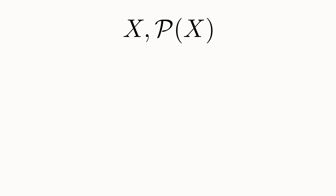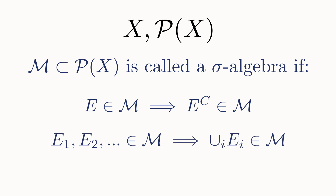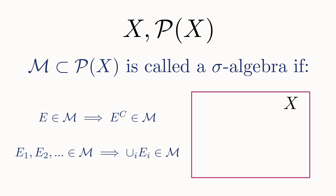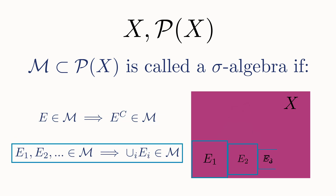Now that we have an abstract set x and understand what a power set is, we are in a position to define a sigma algebra. In order to form a sigma algebra, we need to gather a non-empty collection of subsets of the power set — this could be a proper subset, or even the entire power set. We'll call this collection M, and it must satisfy two criteria. First, it is closed under complements: if a set E is in M, then its complement is also in M. Second, it is closed under countable unions: for any collection of sets in M, the union of all of them must also be in M. This union can be finite or countably infinite; in either case, the union will remain in M. Any collection that is a subset of the power set of x satisfying these two criteria will be a sigma algebra.